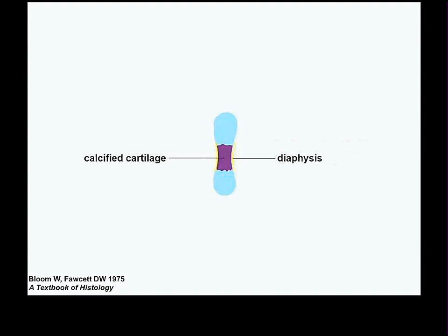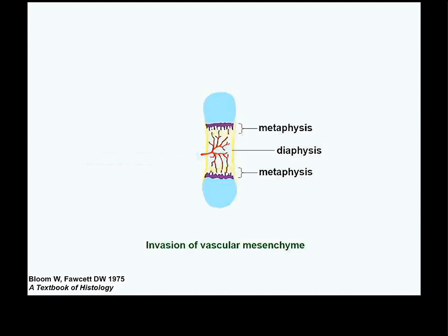The bone grows predominantly by cartilaginous growth. As it does so, cartilage near the diaphyseal bony collar begins to calcify — you cannot replace cartilage with bone without calcifying it first, which essentially kills it. The calcified cartilage is then destroyed and replaced by bone. This central shaft region is the diaphysis. The adjacent zone where cartilage is calcified, destroyed, and replaced by bone is called the metaphysis.